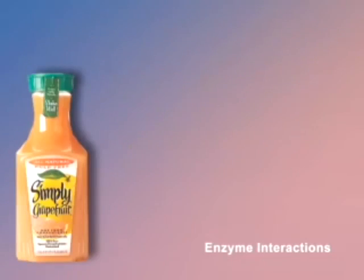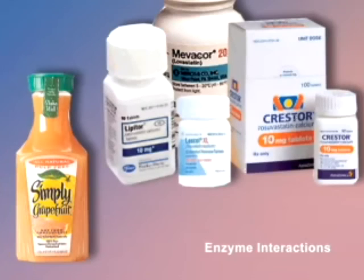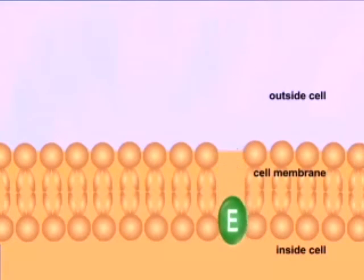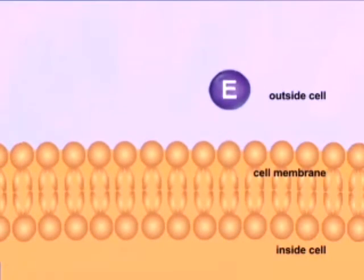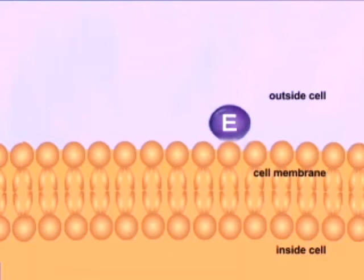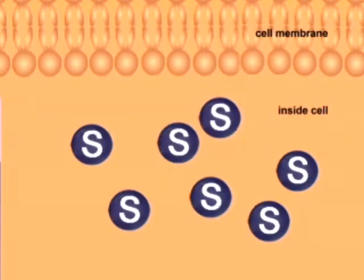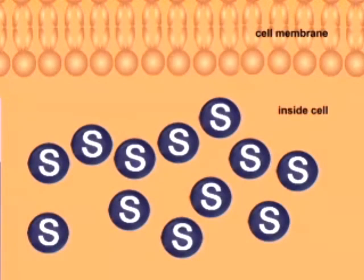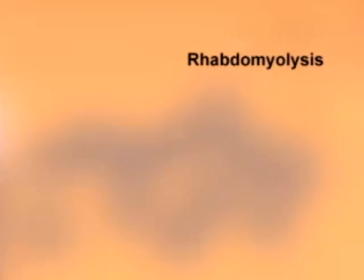For example, drug toxicity can occur when consuming large amounts of grapefruit juice while taking statin drugs. Constituents in the juice interfere with a liver metabolic enzyme, preventing the proper breakdown of these drugs. This increases the concentration of the statin and can cause the life-threatening condition rhabdomyolysis, which involves the breakdown of muscle tissue.